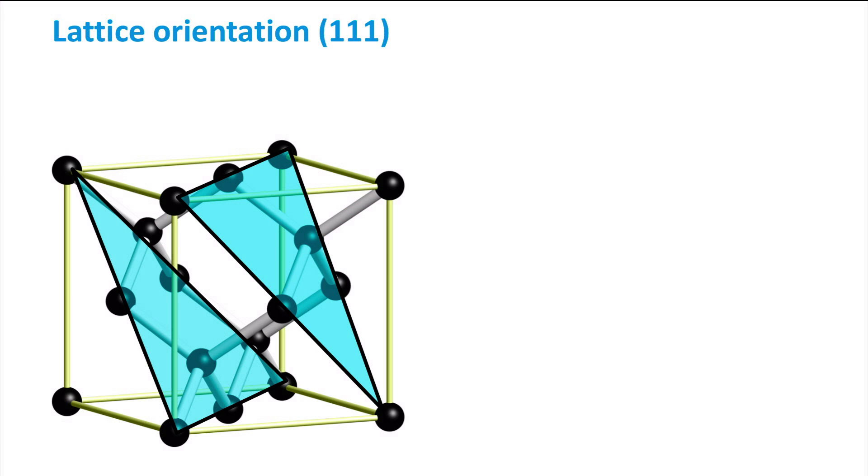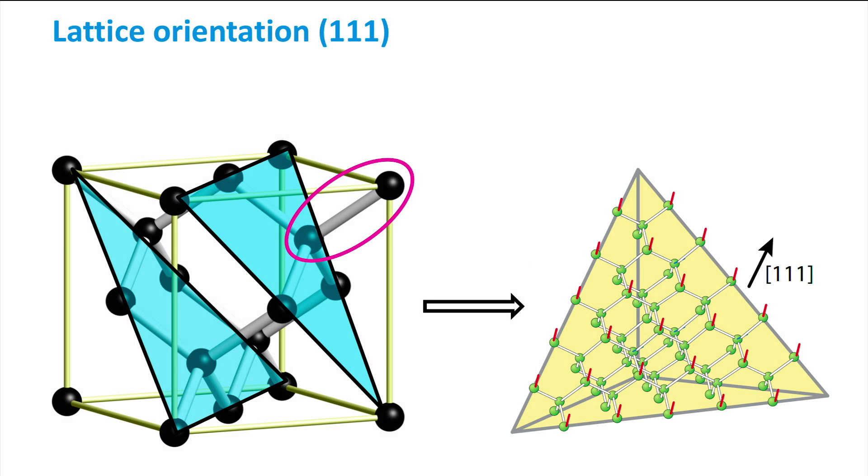For the 1-1-1 orientation, we see that each atom at the surface of the crystal has one dangling bond. Each surface atom is thus backbonded by three neighboring atoms. Later in the course we will discuss more differences between these two lattice orientations, but for now we first discuss briefly the effect of the lattice orientation on the energy dispersion diagram for silicon.